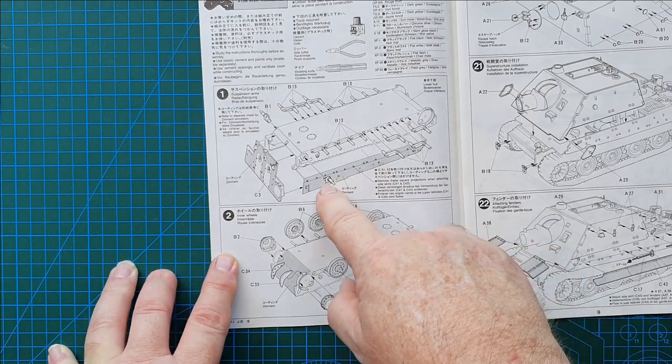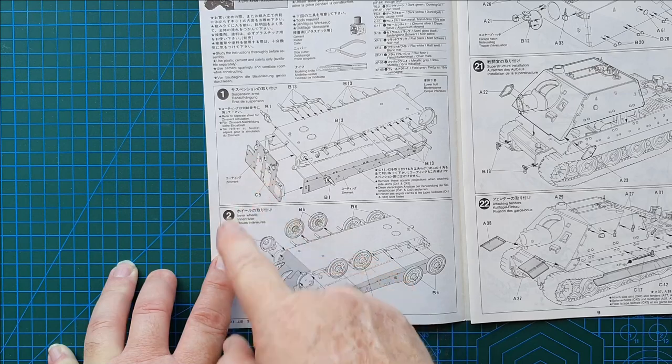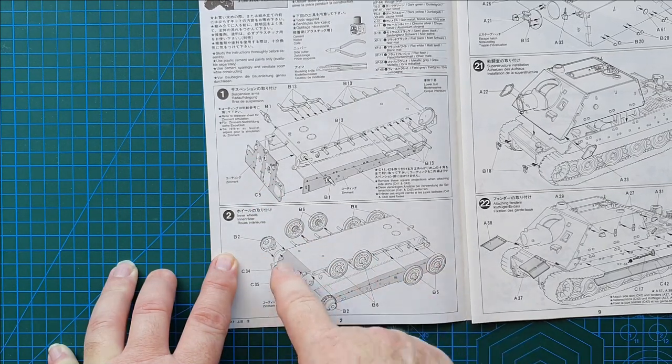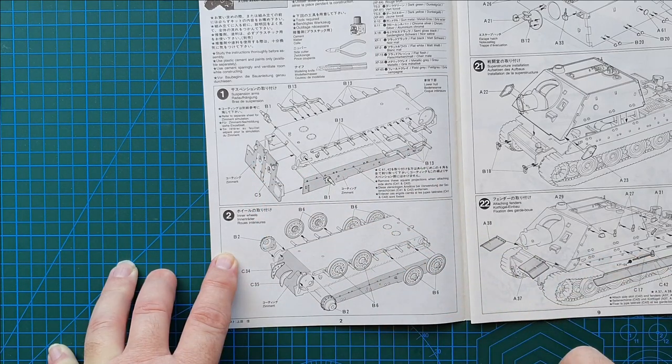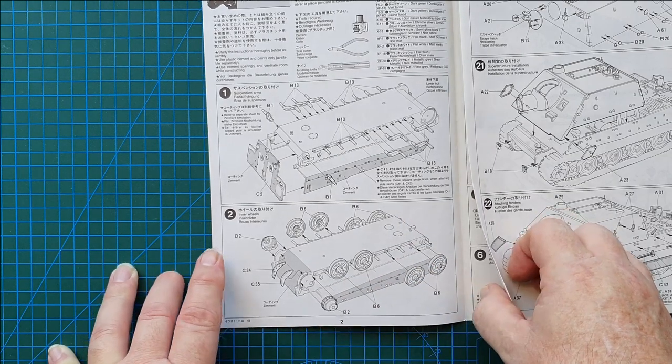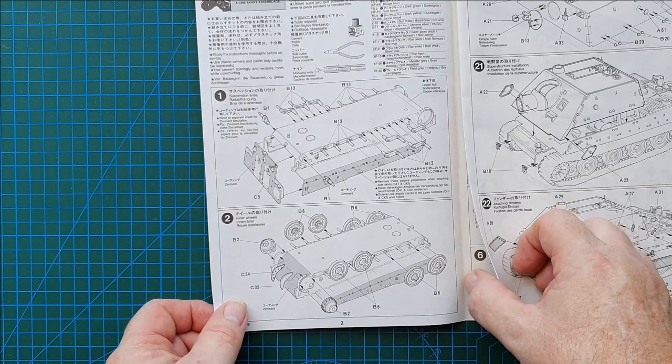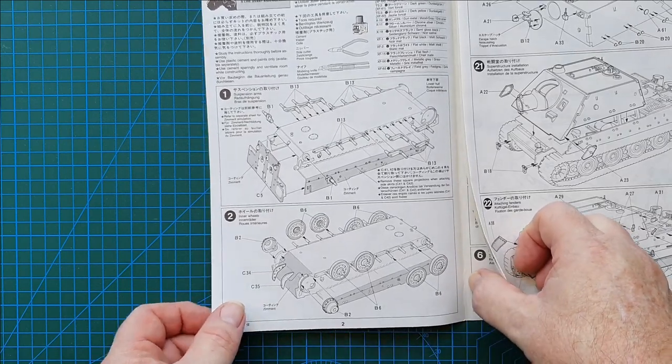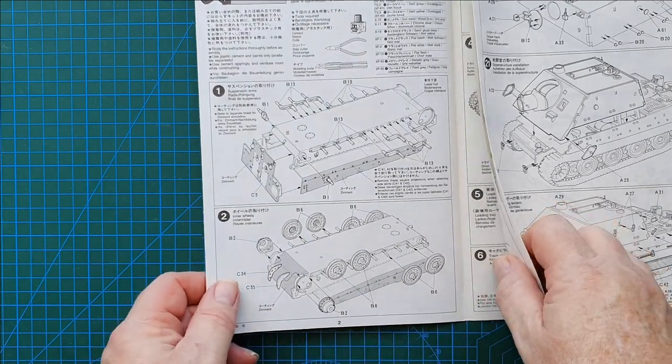If you read the instructions carefully you will not have a problem putting the wheels on. Note that it does specify in these grayed out areas Zimmerit. This is where the Zimmerit was applied to this vehicle, which is why I bought the aftermarket Zimmerit. I recommend to anyone who buys this kit, definitely source an aftermarket Zimmerit kit. It will definitely enhance the model.